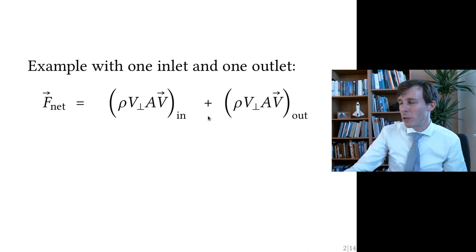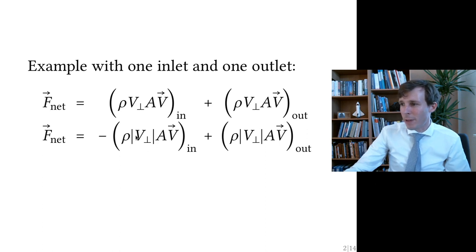There's a certain sign convention used in here, which is that this V perpendicular, the inlet coming velocity, is negative when it's coming in and positive when it's going out. So if I take the absolute value of this, so I have a positive number here, I have to put a minus sign in front of the incoming and a positive sign in front of the outgoing.